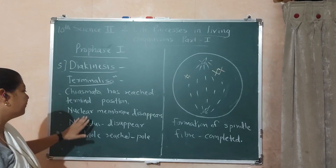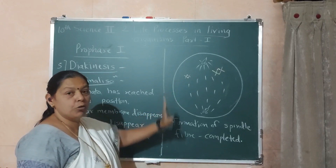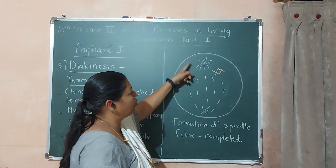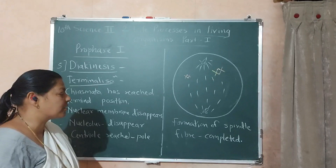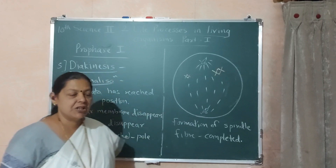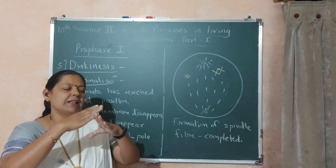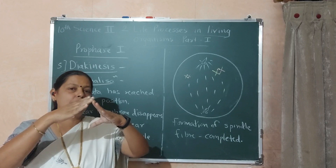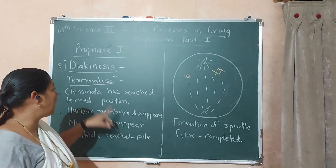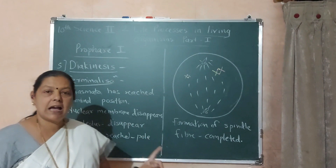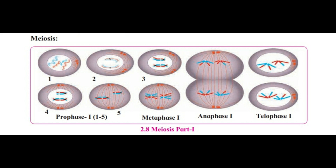The last step in prophase 1st is diakinesis. In diakinesis, terminalization takes place — the chromatids are moving away from each other but are still in contact at the chiasmata, which has reached a terminal position. This position is called terminalization. The nuclear membrane disappears, centrioles reach the polar region, and the formation of spindle fibers is completed. These chromatids are moving away but are not totally separated, so this process is called terminalization — the last step of prophase 1st.